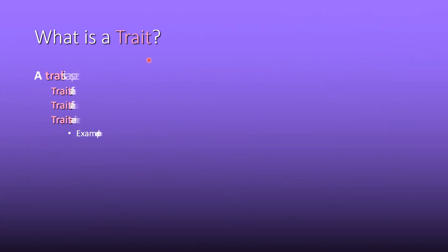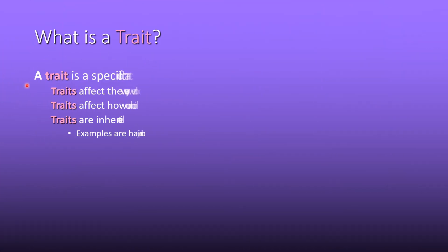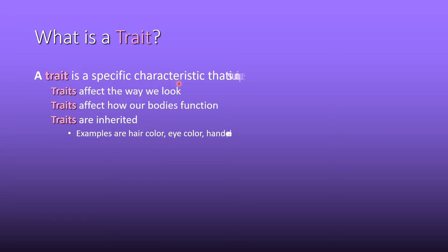What is a trait? A trait is a specific characteristic that is unique. Traits affect the way we look and how our bodies function. Traits are inherited. Examples are hair color, eye color, hairiness, etc.